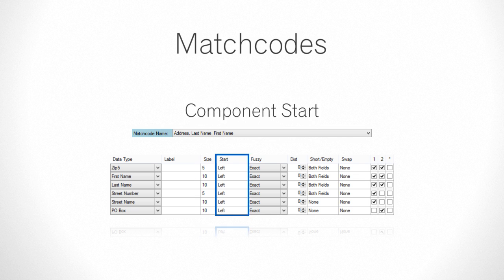Component Start is the starting position. Almost always the starting position is set to extract values from the left of the data field. But alternative settings exist when, for example, a data type contains formatted data and you wish to evaluate a set position.